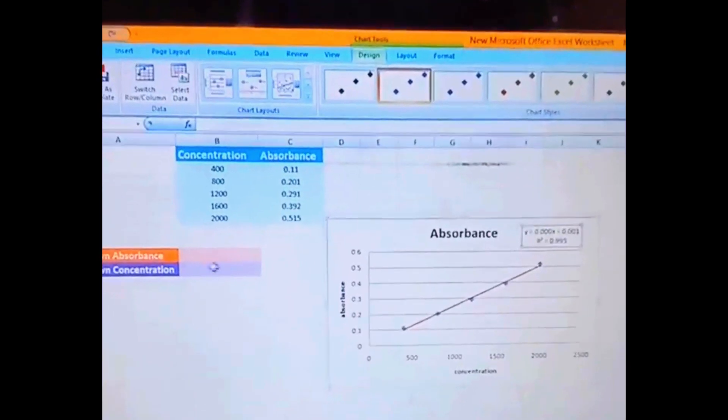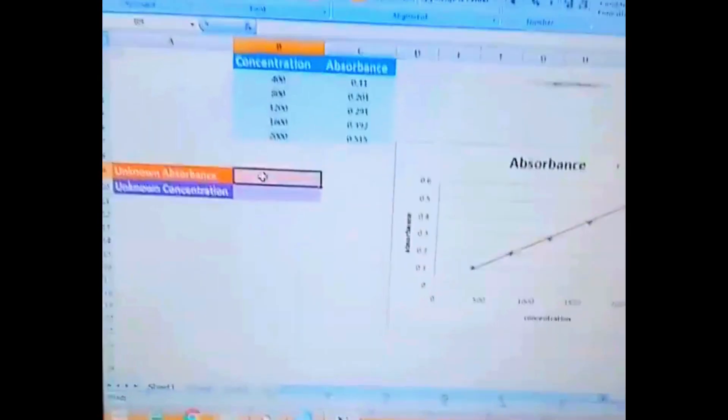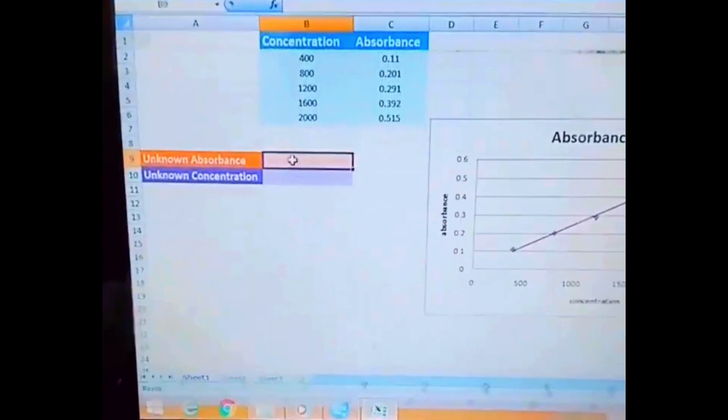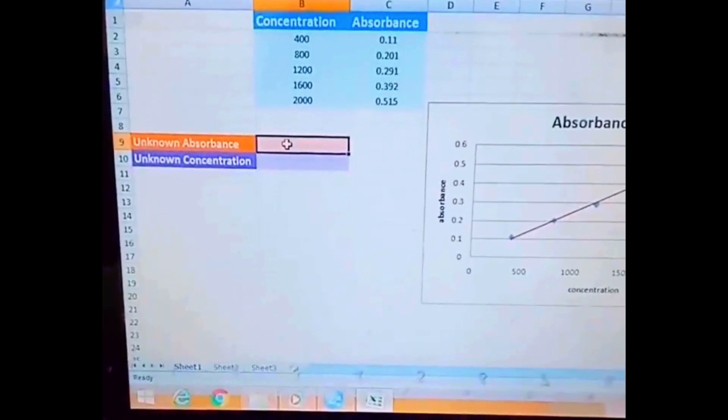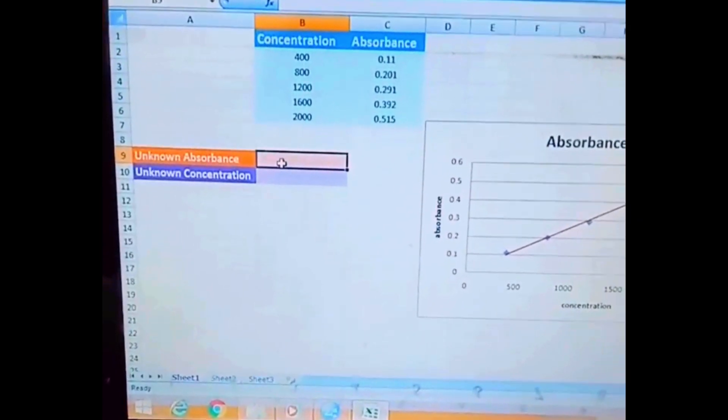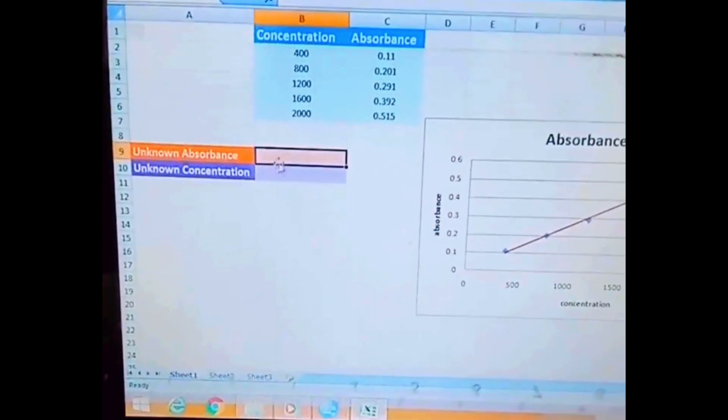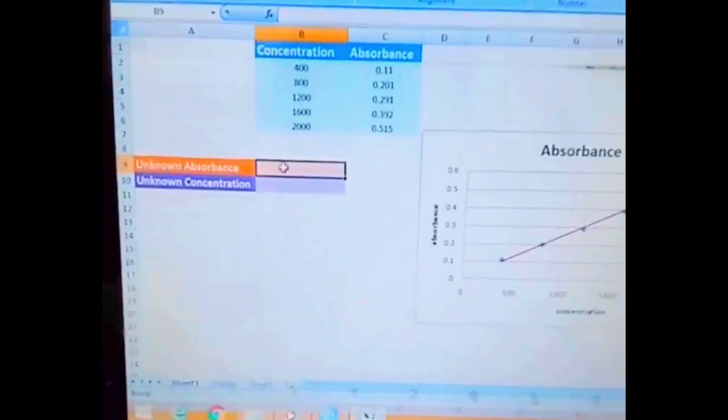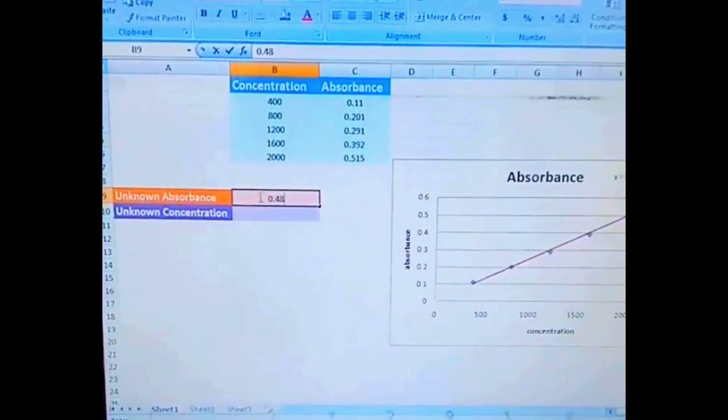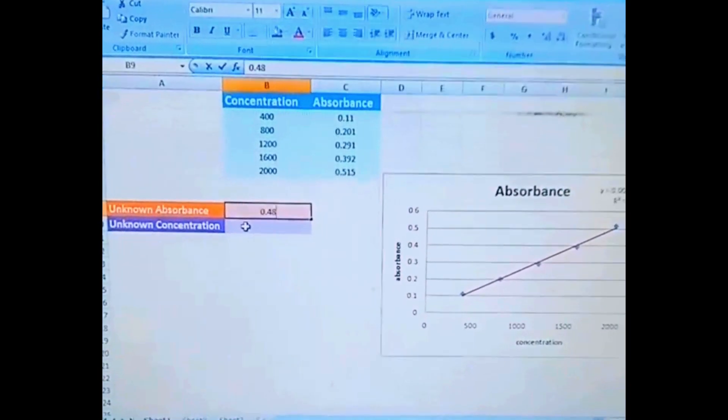This thing you know very well. Now the unknown absorbance we have to calculate. This value comes from the experiment. Whatever value you have, you can put it here. For example, I'm putting here 0.48, absorbance of the unknown test sample.